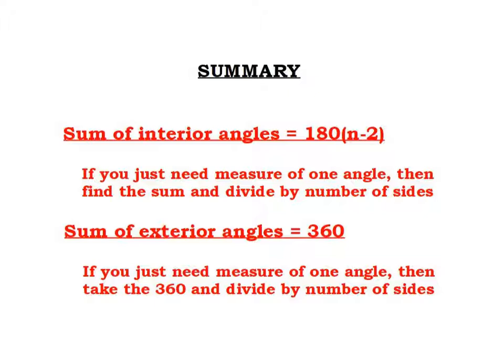Here's a quick summary. The sum of the interior angles is always 180 times (n minus 2) — that's always the sum. If you want to know just one of them, divide by how many there are — but that only works for a regular polygon. The sum of the exterior angles always equals 360 — it's not even a formula, just a number. If you want just one exterior angle, divide by how many angles there are — again, only for a regular polygon.